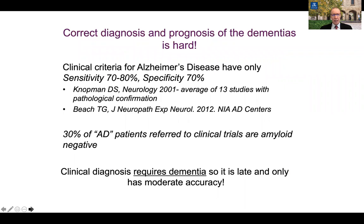A bit of background. Correct diagnosis and prognosis of the dementias is hard. Clinical criteria for Alzheimer's disease have only a sensitivity of about 70 to 80 percent and a specificity of 70 percent when compared to post-mortem eventual diagnosis, and there are numerous publications supporting this. It's also been noted that 30 percent of patients with a clinical diagnosis of Alzheimer's disease referred to clinical trials for treatment have negative amyloid PET scans, which by definition excludes Alzheimer's disease.